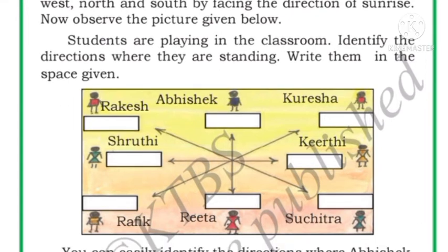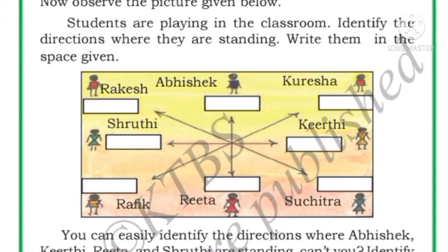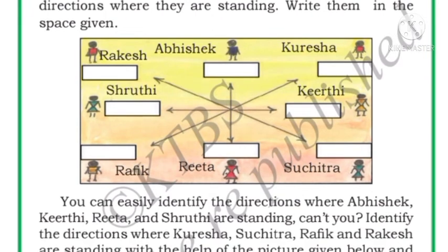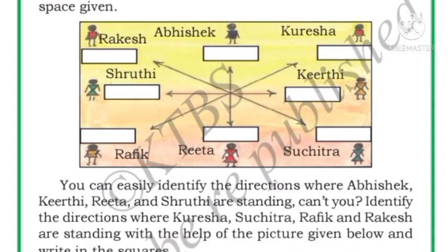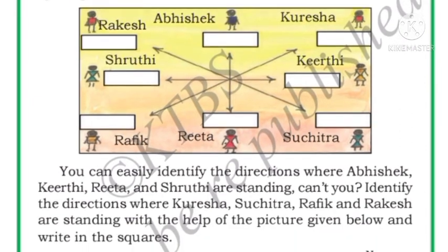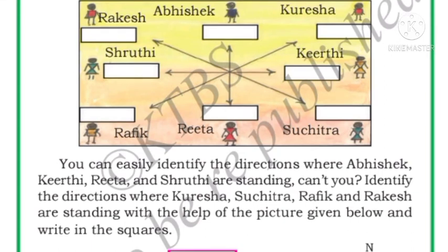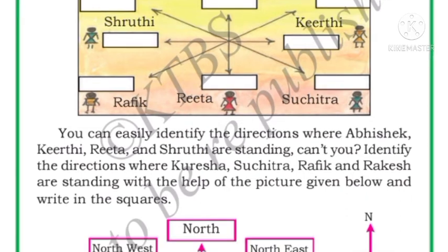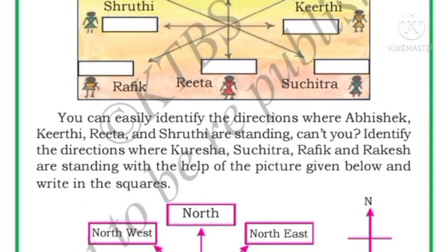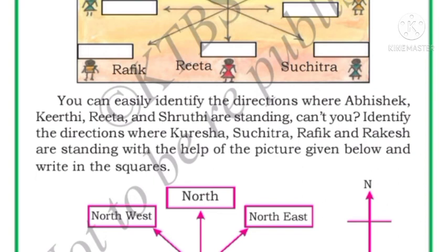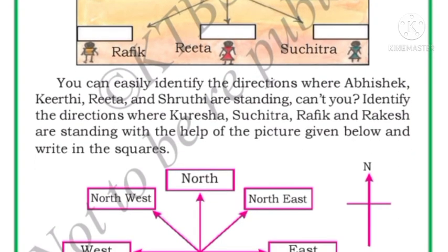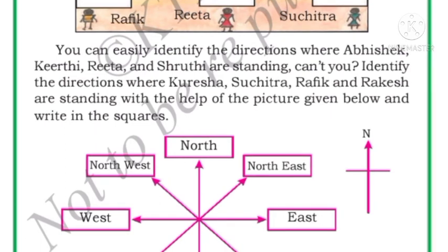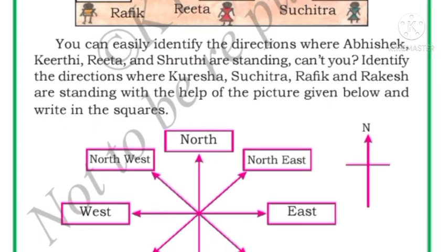Observe the picture given below — students are playing in the classroom. Identify the direction where they are standing and write them in the space provided. In this picture: upward is North, downward is South, left is West, and right is East. In between we have Northwest, Northeast, Southwest, and Southeast. Identify the directions where Abhishek, Kirti, Rita, Shruti, Koreish, Suchitra, Rafiq, and Rakesh are standing.